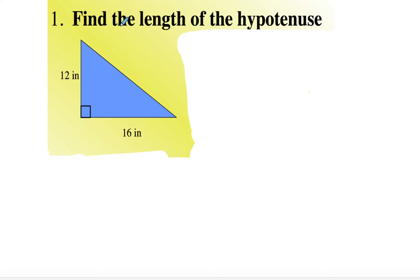This one says find the length of the hypotenuse, so this would be the hypotenuse. I'm going to let this equal A and this equal B. It doesn't really matter which one you let equal A and which one you let equal B, because what you're going to do with the Pythagorean theorem is you're going to square them anyway.